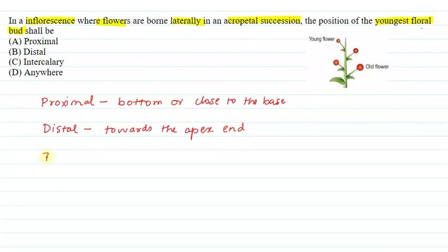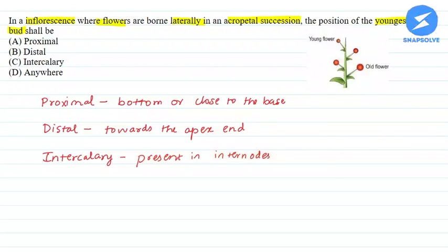And intercalary means that it will be present in inter nodes. This means that it will be present anywhere.